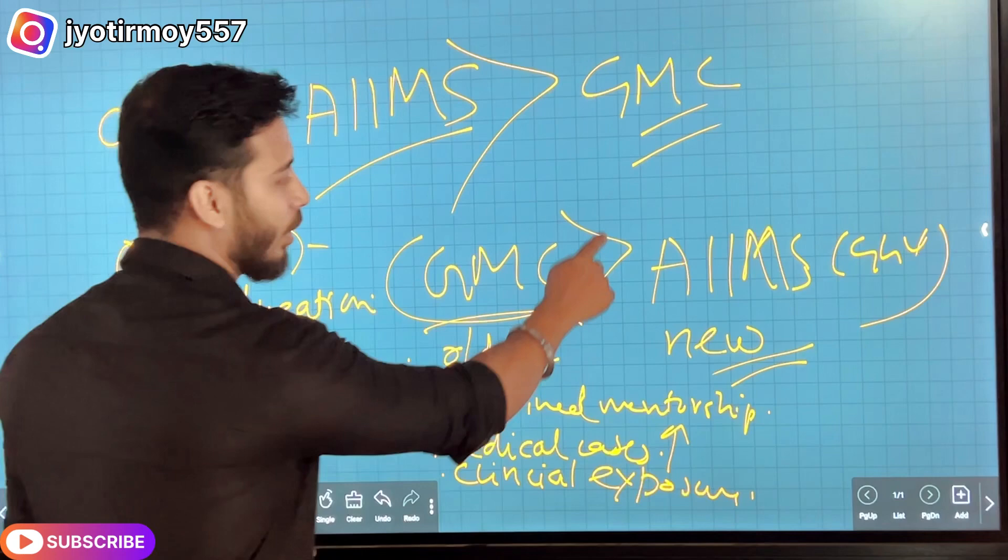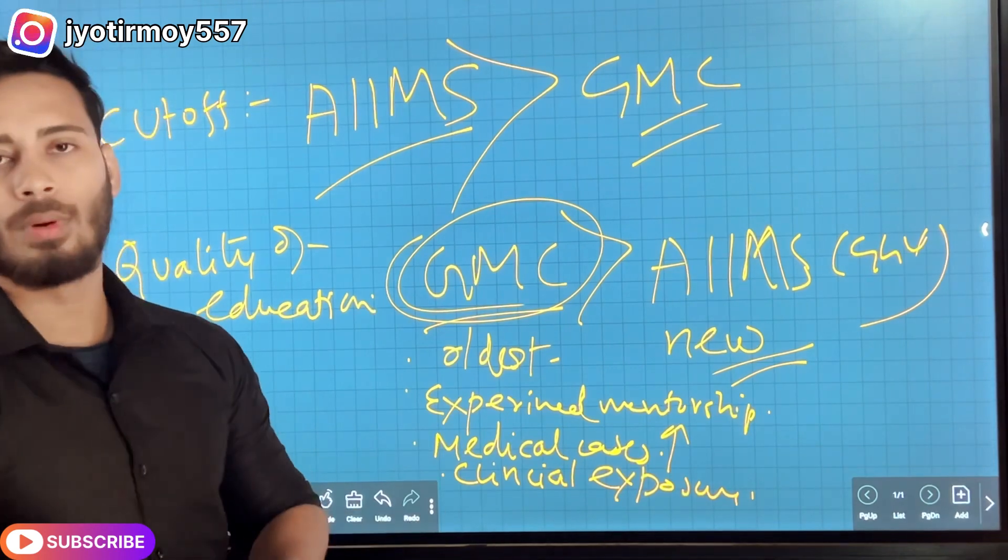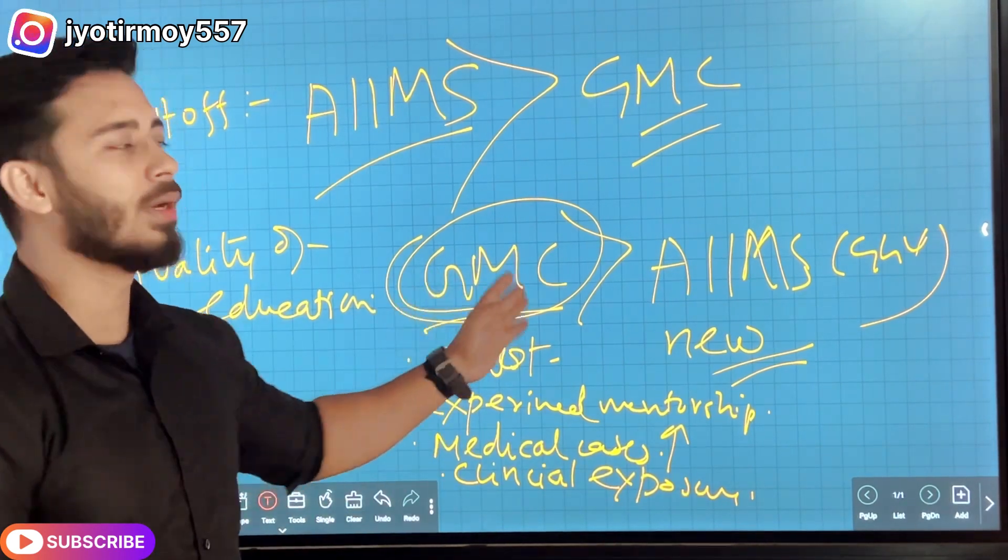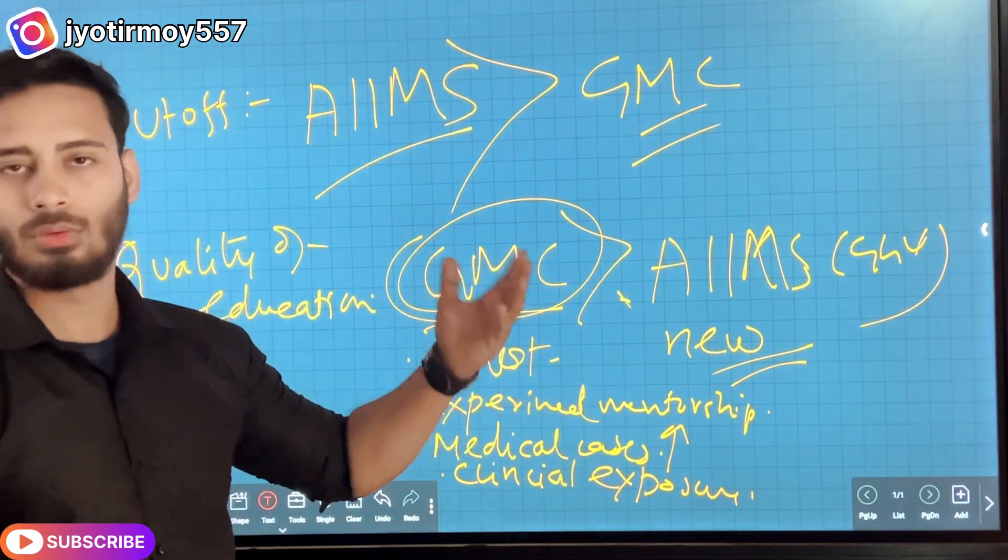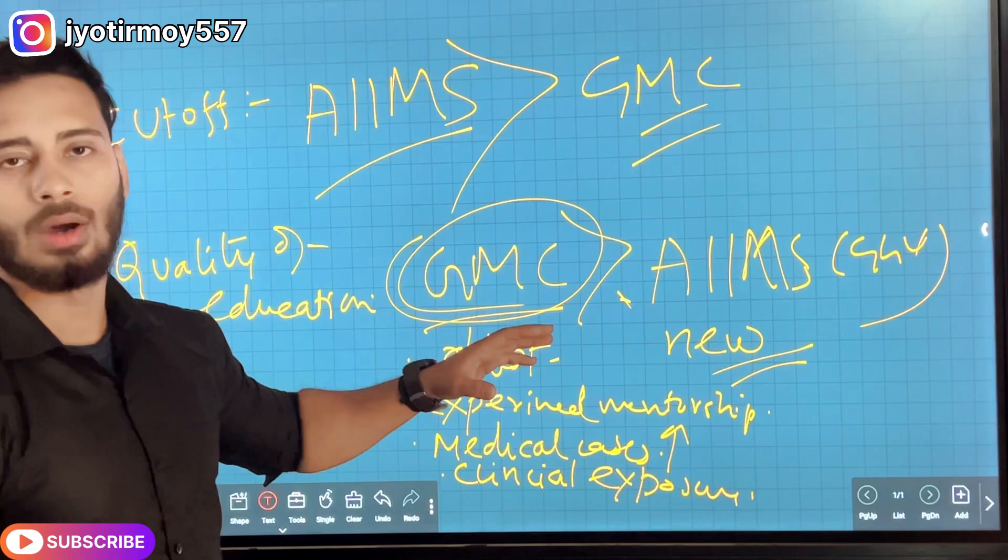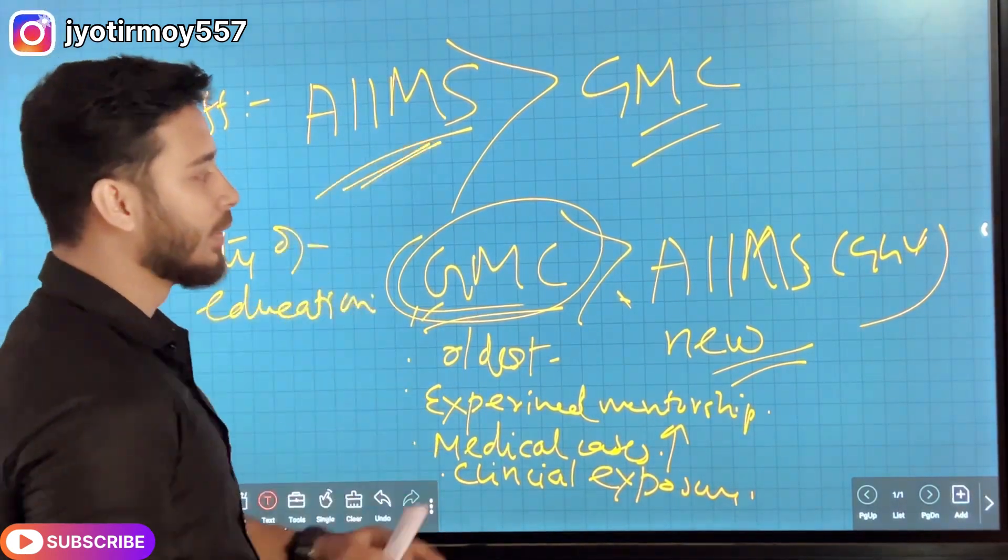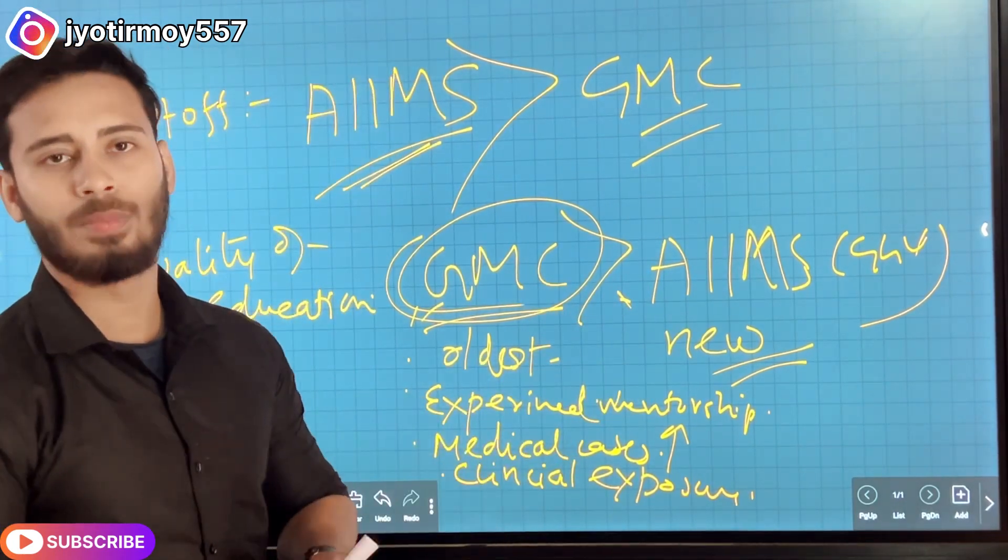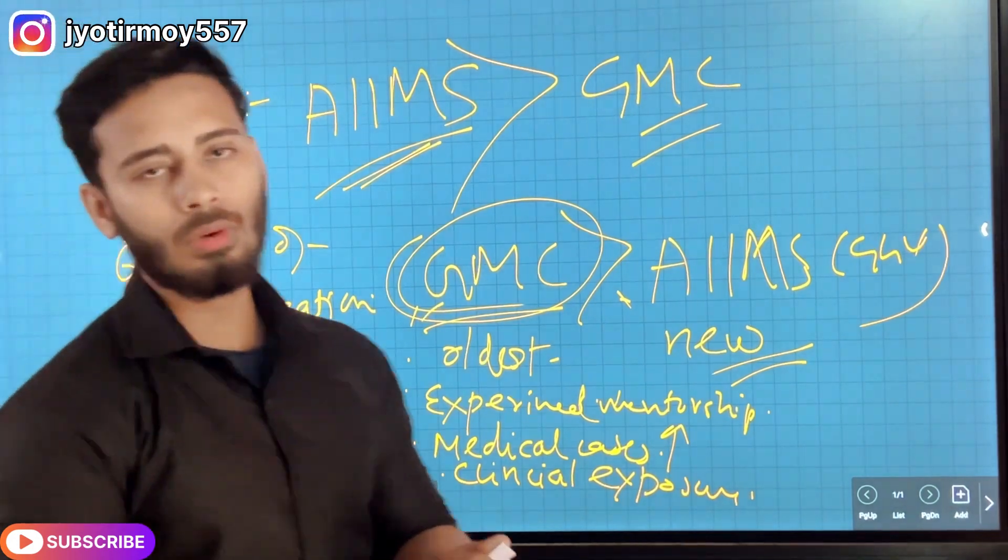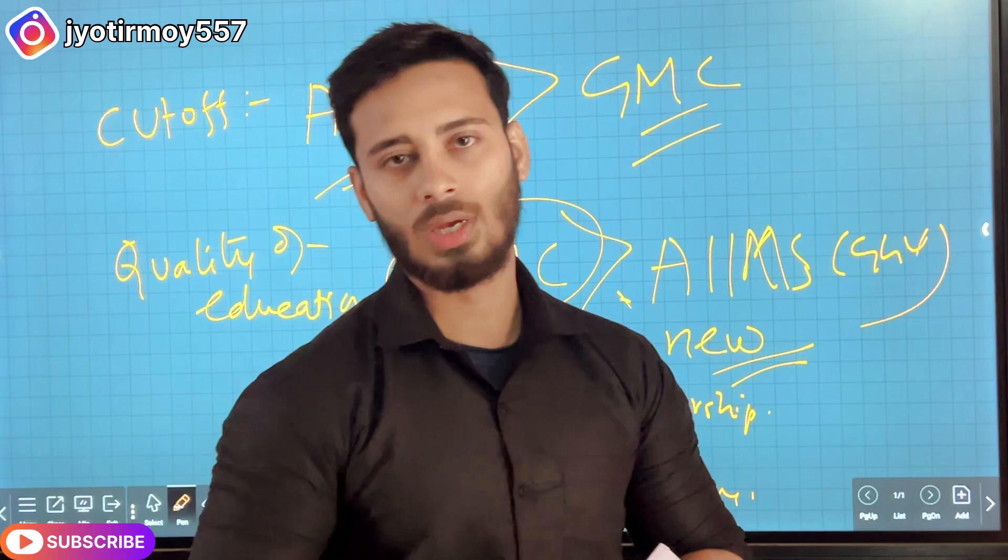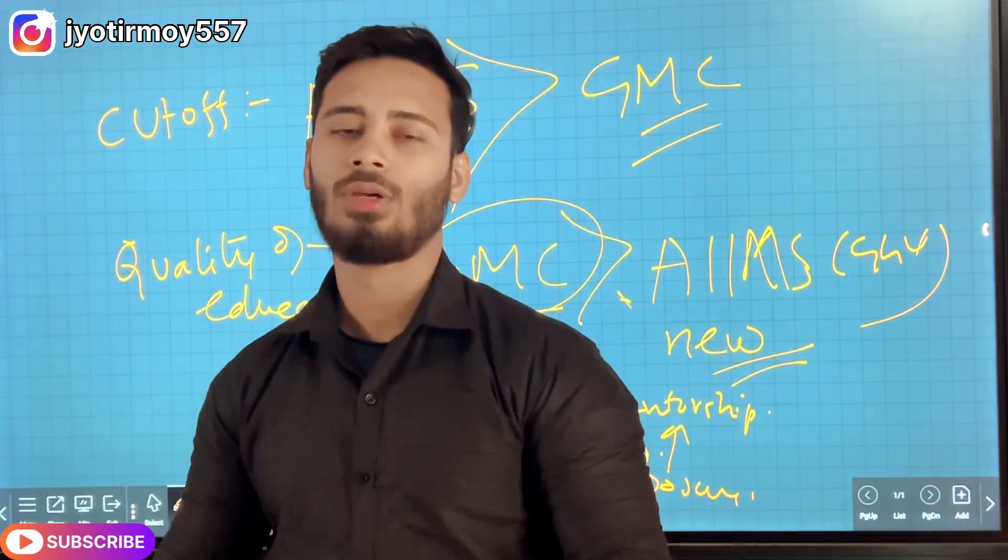So you have AIIMS or GMC. On various parameters, it is clear that GMC is better than AIIMS for now. I've got to say AIIMS cutoff is high, but if you have a doubt about that, then GMC is better than AIIMS. Though AIIMS cutoff is high, GMC will be the best for PG, for UG students and MBBS. So that was the thing. Thank you, I will try to bring more videos to you.